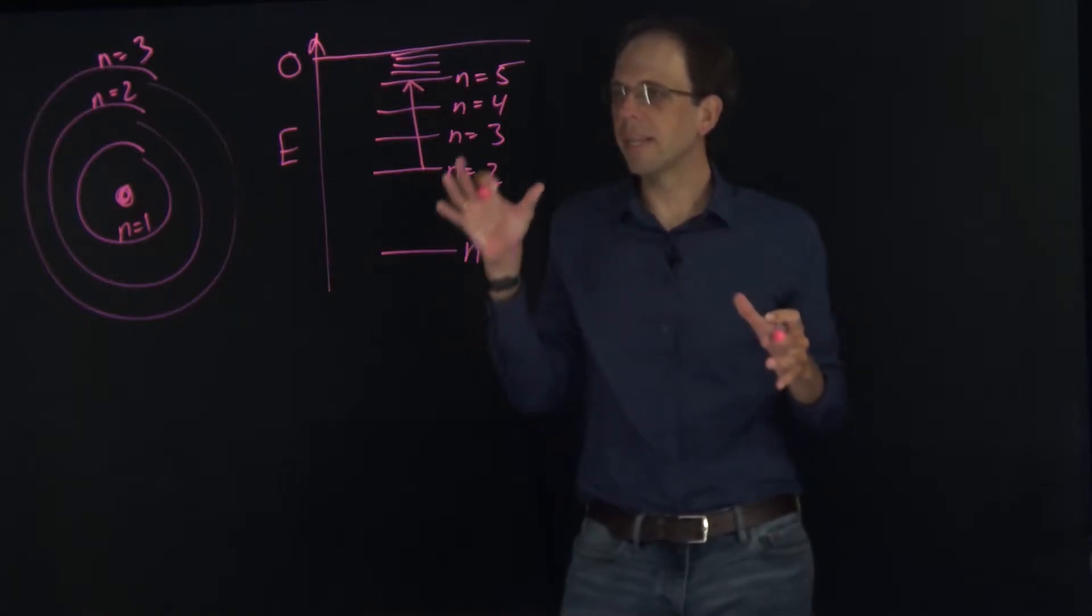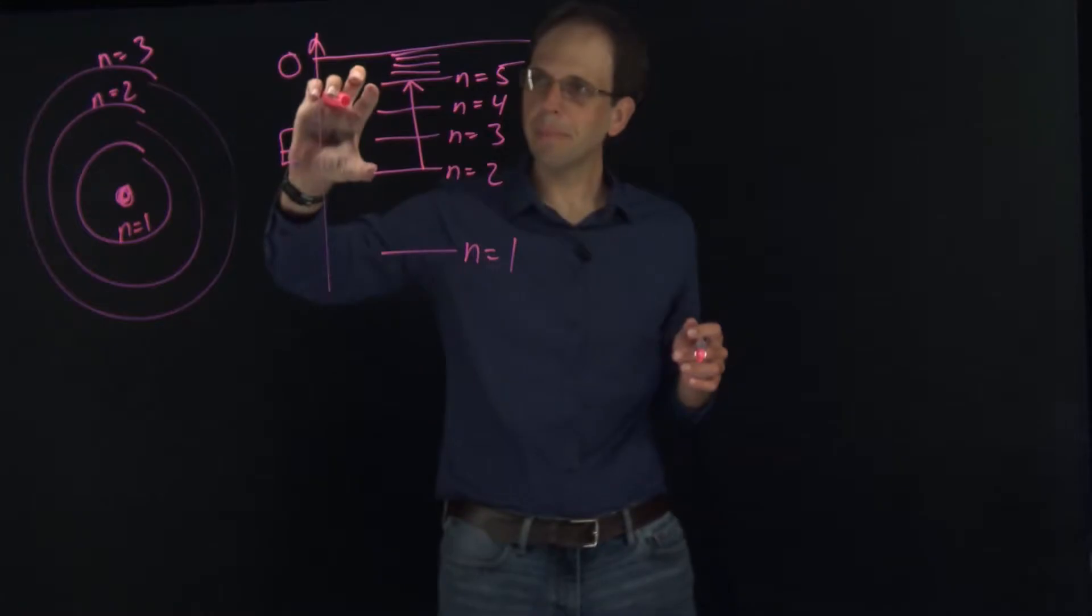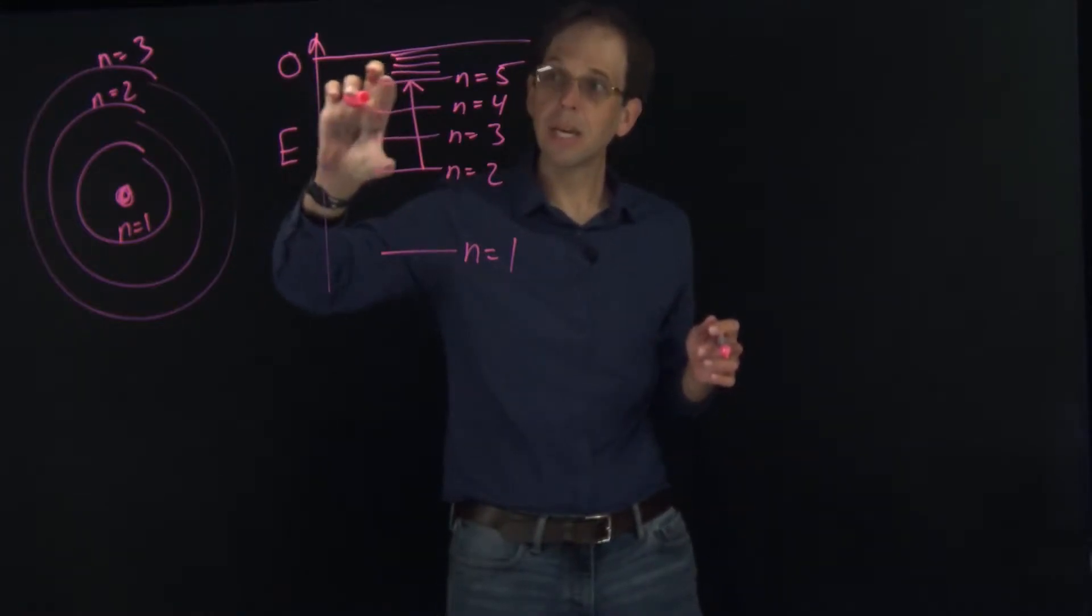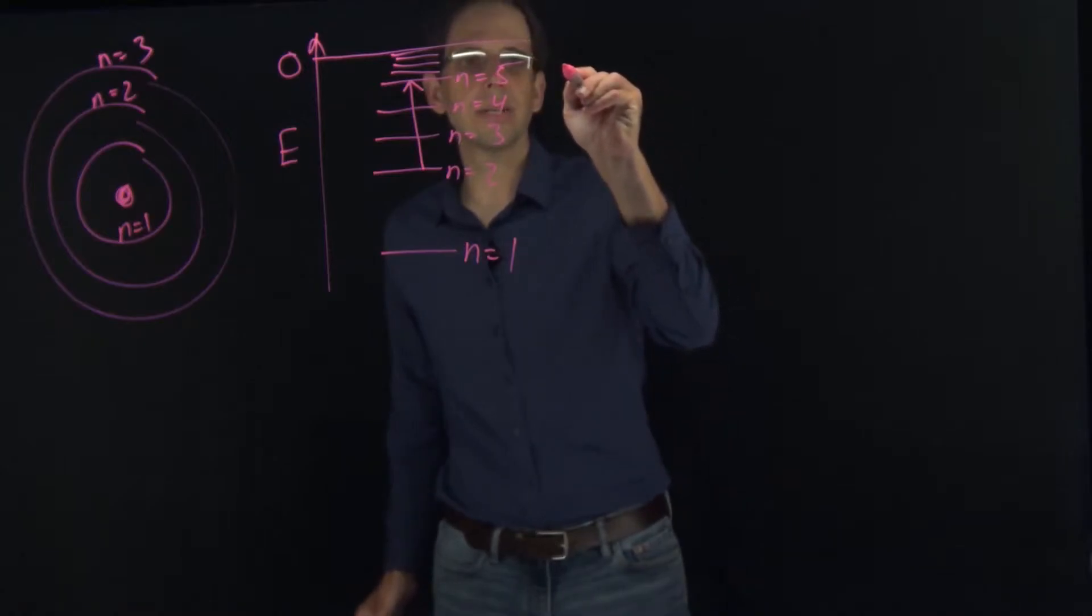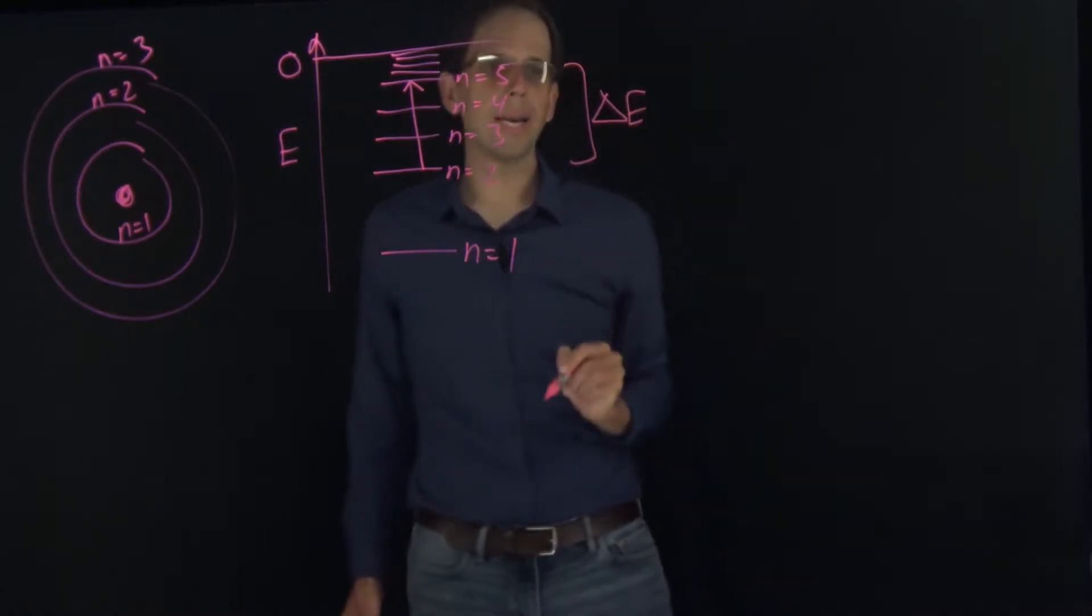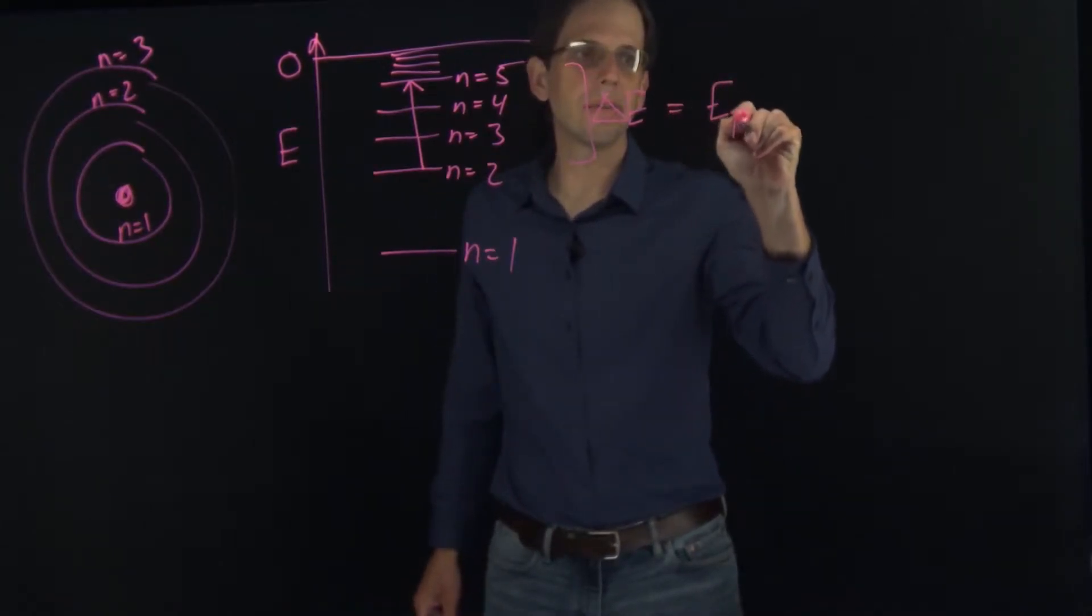For that to occur, the energy of our photon of light has to exactly match this energy difference between the two states. So if I call this difference delta E, I need that delta E to equal the energy of the photon.